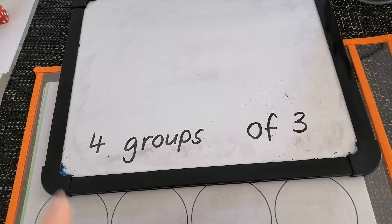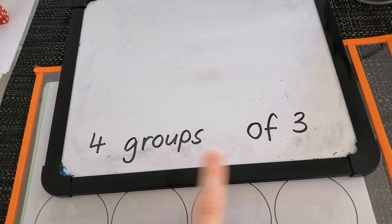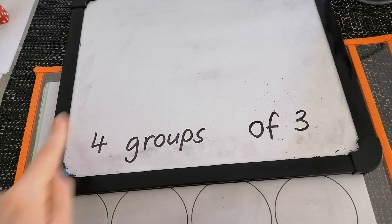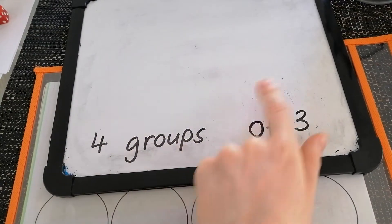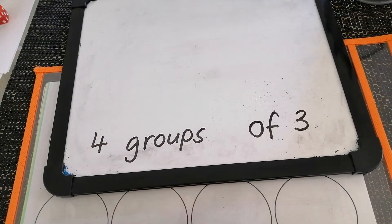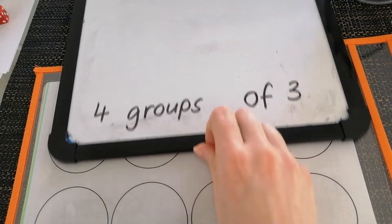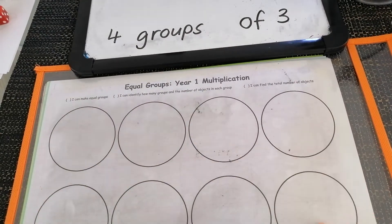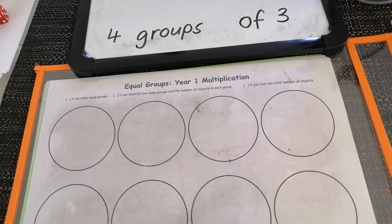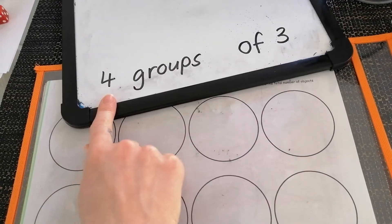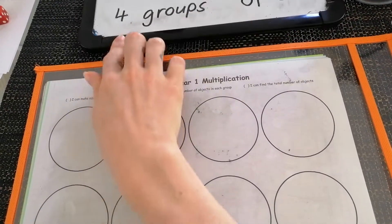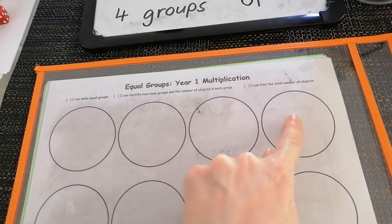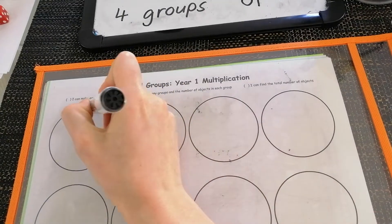Our first question says make four groups of three. So I need to make four groups with three things in each of those groups. Looking at my board, I can see there are lots of circles — those are my groups — but I only need to make four groups. So I'm going to count: one, two, three, four, and I'm going to circle them.